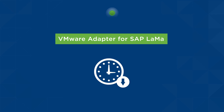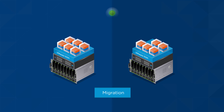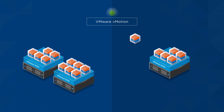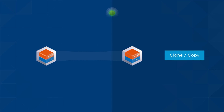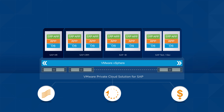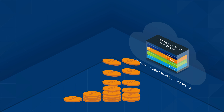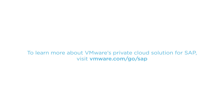Your uptime gets a boost with additional VMware Adapter functionality, such as storage vMotion, network migration, and live clone and copy. With fluid, dynamic, and cost-effective integration with your SAP landscapes, the software-defined data center maximizes the value of your SAP investment. To learn more about VMware's private cloud solution for SAP, visit www.vmware.com/go/sap.